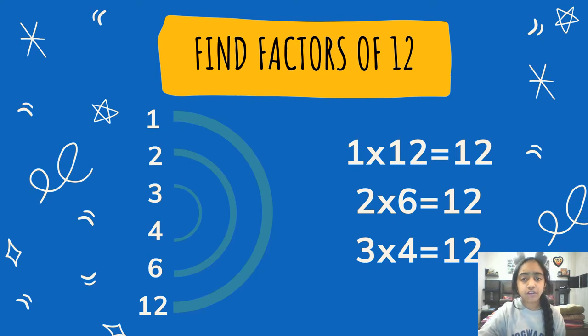After 1 comes 2. So 2 times 6 is 12 as we all know. We write 2 and 6 on opposite sides and mark an arc. After 2 is 3. We know that 3 times 4 equals 12. So we write 3 and 4 in our list of factors. Now 3 and 4 are consecutive numbers, so our list stops there. We have all the factors of 12 which are 1, 2, 3, 4, 6, and 12.